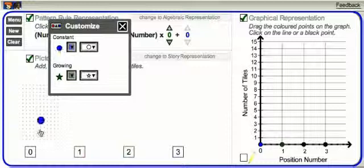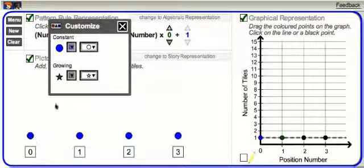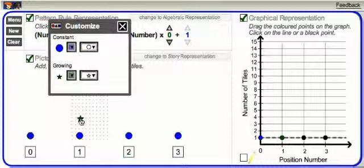Drag the constant tile to position 0 and draw the growing tiles to position 1.